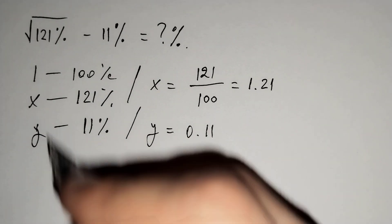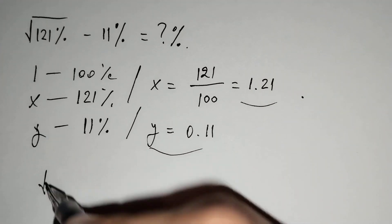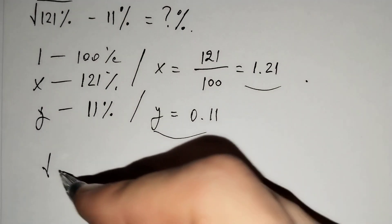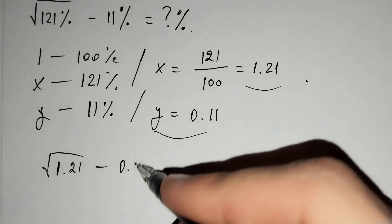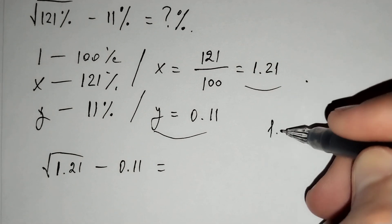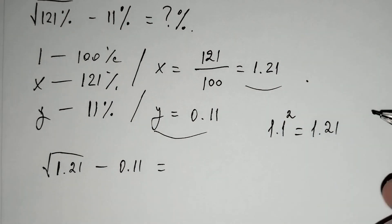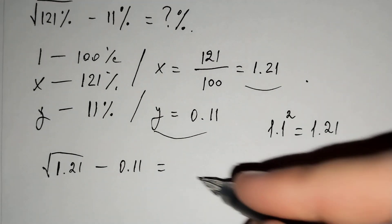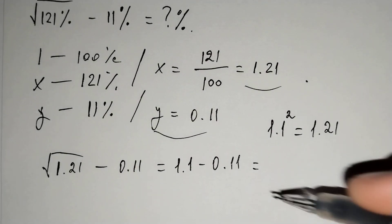Now, let's put this above the square root of 1.21 minus 0.11 equals to. We know that 1.1 squared equals to 1.21 and this is equal to 1.1 minus 0.11.